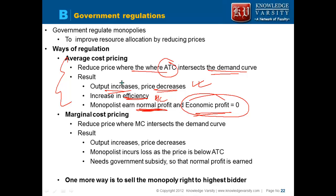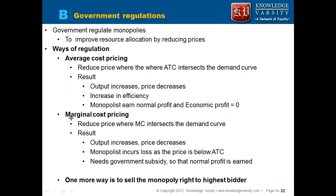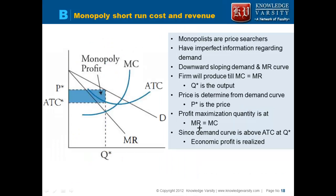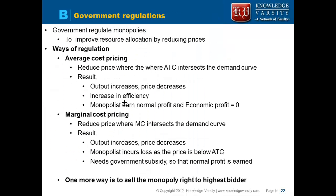The government can also introduce marginal cost pricing. Marginal cost pricing is when the price is set where the marginal cost intersects the demand curve. At this pricing point, output increases and price decreases further. The monopolist may incur a loss when the price set is below the average total cost.